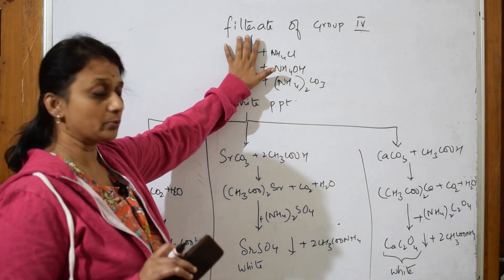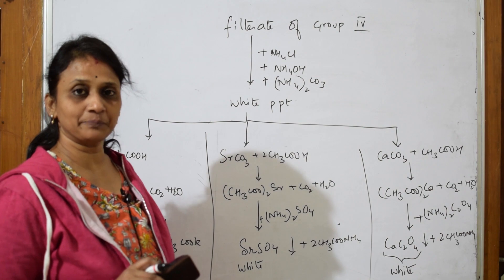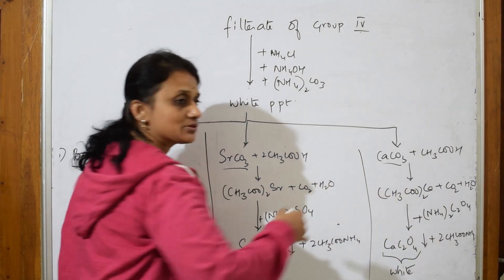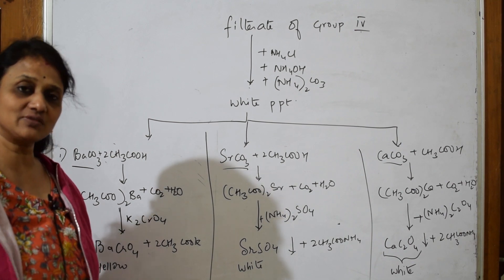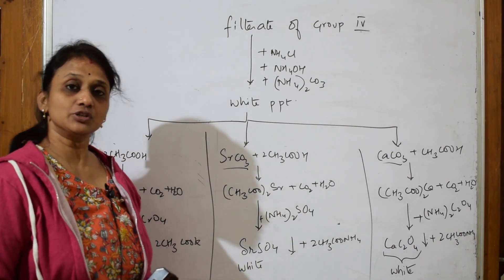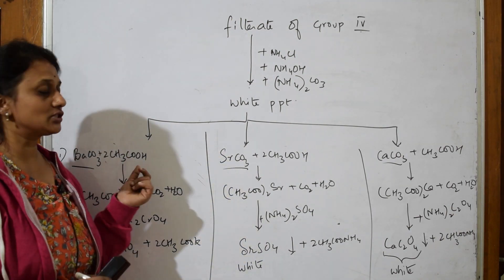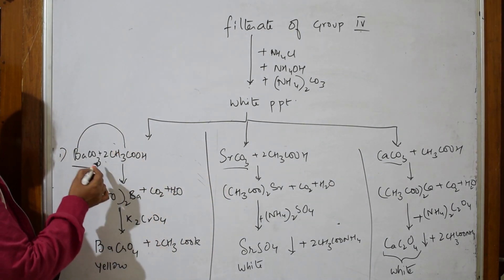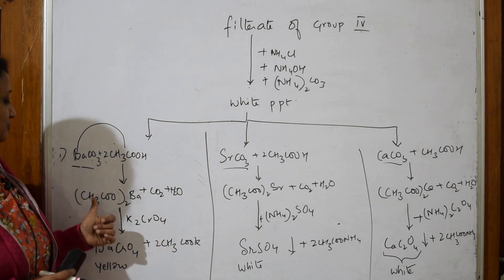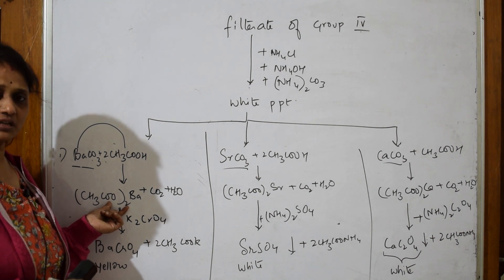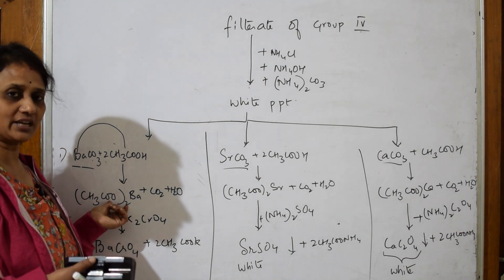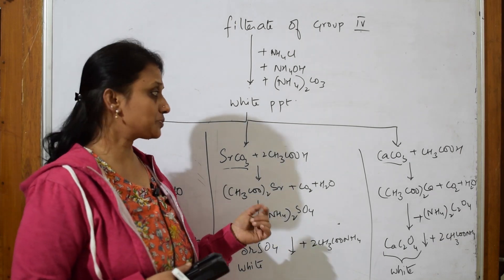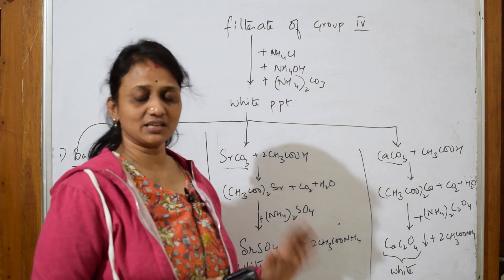After taking the filtrate from Group 4 and adding group reagents, you get a white precipitate. Now for analysis: the white precipitate could be barium carbonate, strontium carbonate, or calcium carbonate. Take that white precipitate in a test tube and add acetic acid. Carbon dioxide and water are released, and barium acetate, strontium acetate, or calcium acetate forms depending on which cation is present.